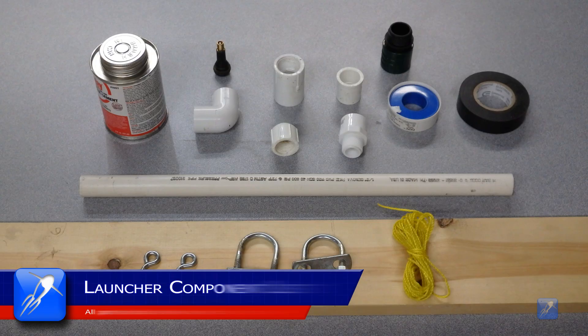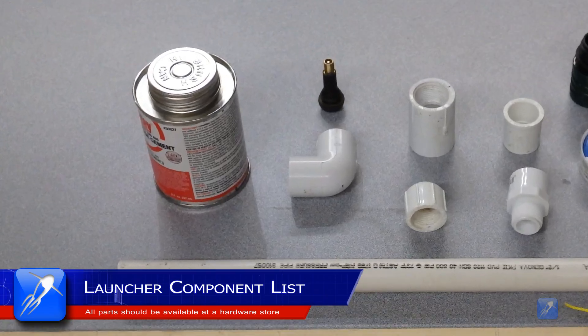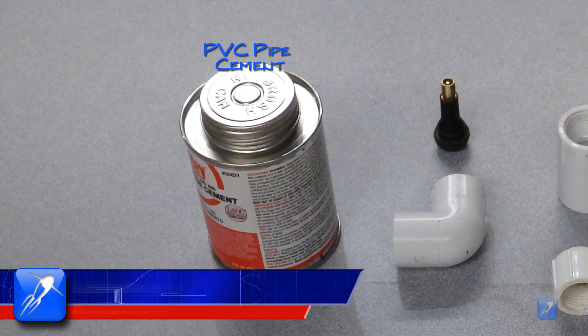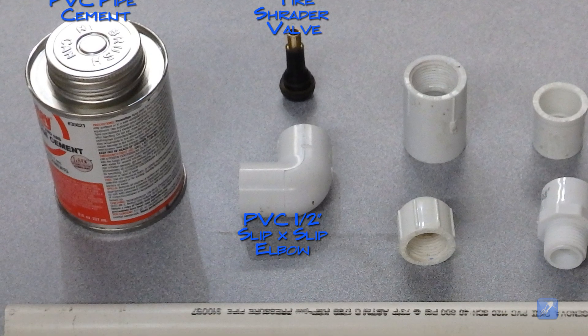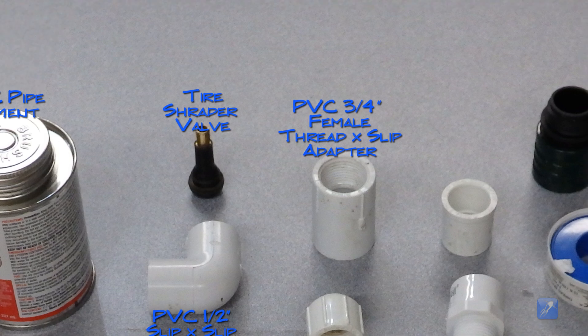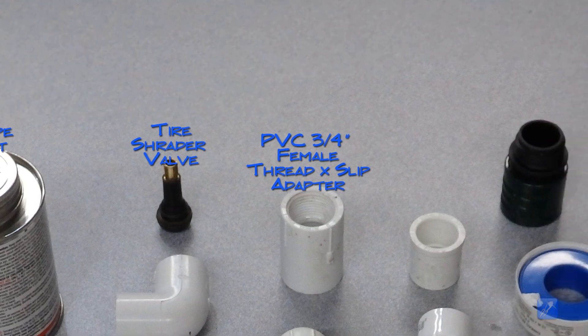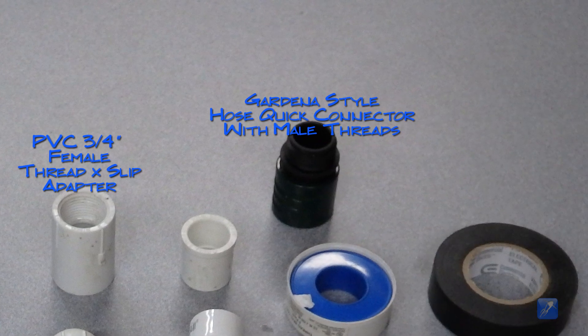To make the Gardner launcher you only need a few items from the hardware store: PVC pipe cement, a tire Schrader valve, a ½ inch PVC slip to slip elbow, a ¾ inch female thread to slip adapter, and a hose quick connector with male threads.